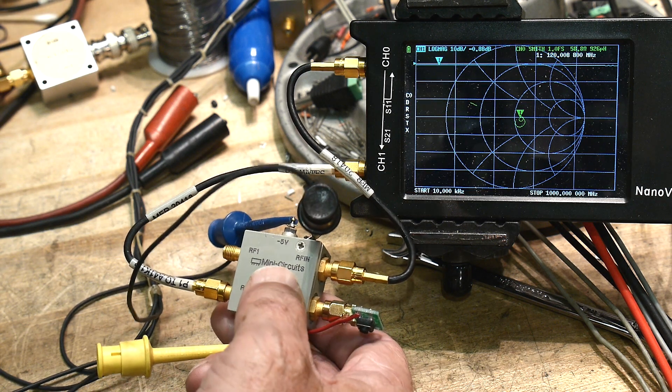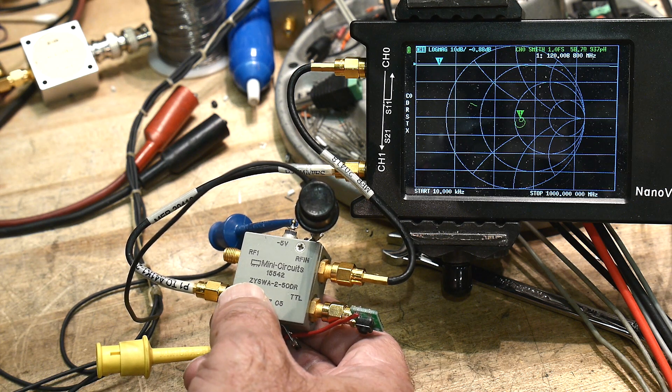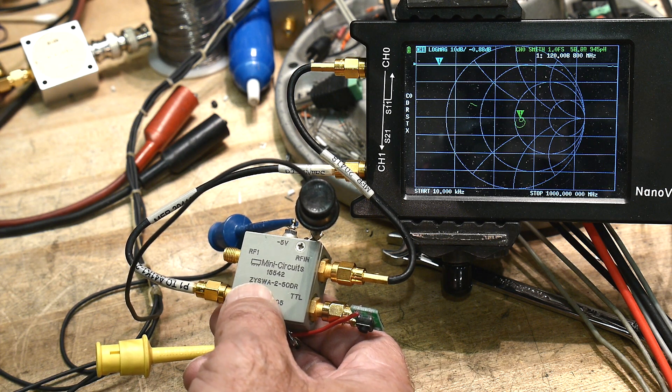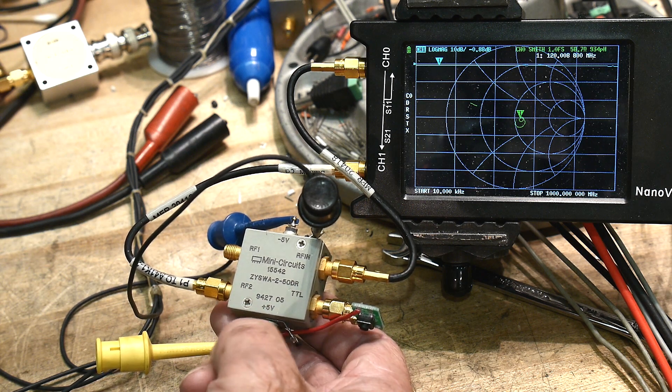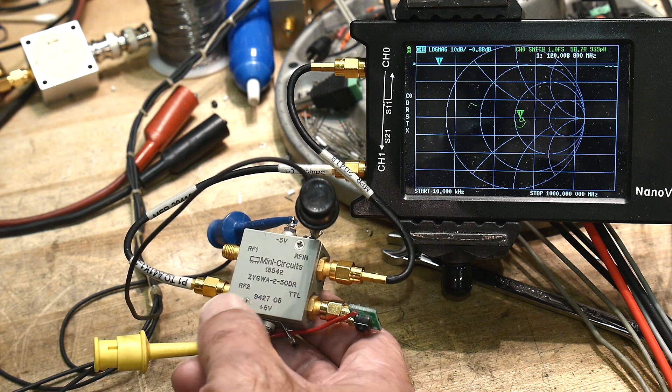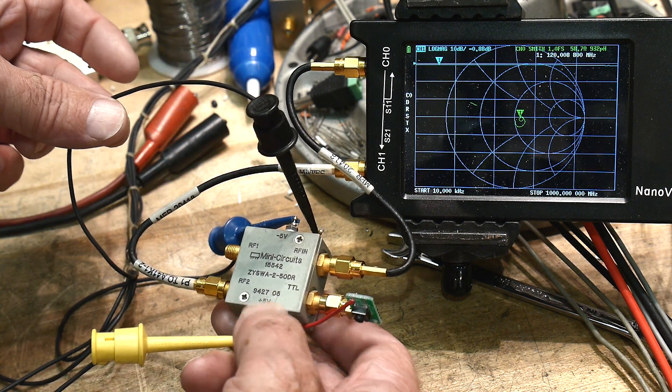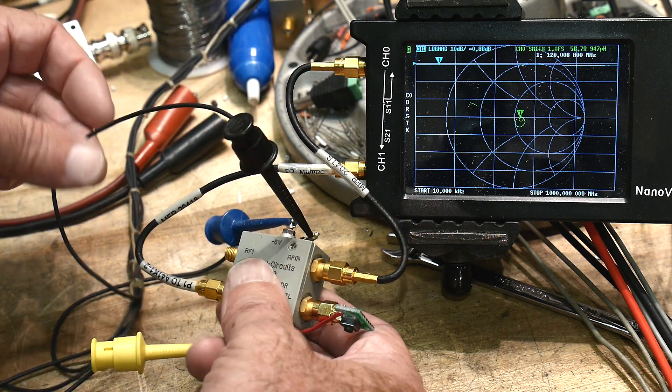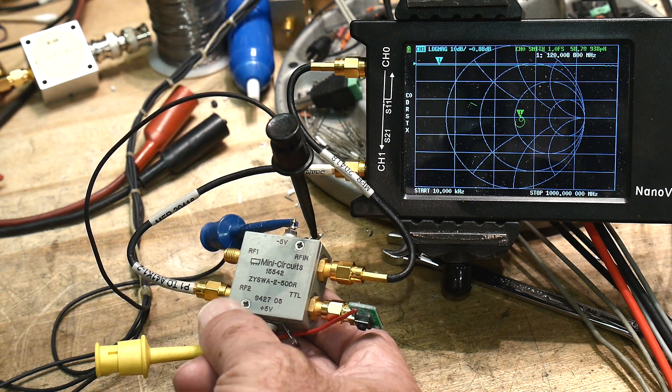But this is a... I'll read the part number. This is a Mini Circuits ZYSWA-2-50DR. I believe this is an older model. They don't make this one anymore. And I think the guy on eBay has got a bunch of these, so go pick one up for 99 cents.